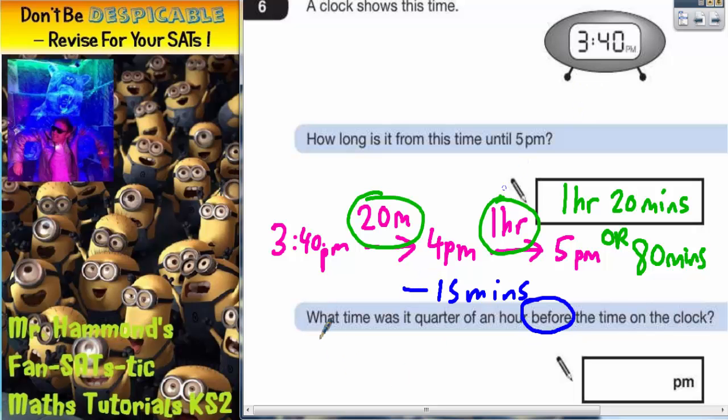Well, if you do 40 take away your 15 minutes, 0 take away 5 you can't do. 10 take away 5 is 5, and 3 take away 1 is 2. So 40 minutes take away 15 minutes is 25 minutes. So the final answer is going to be 3:25.